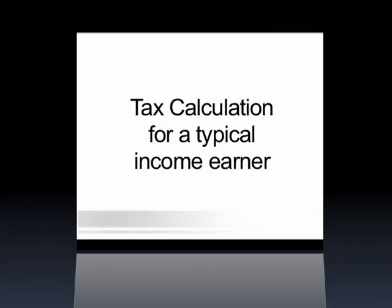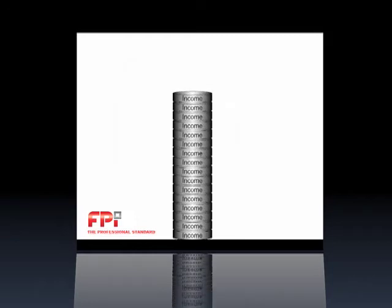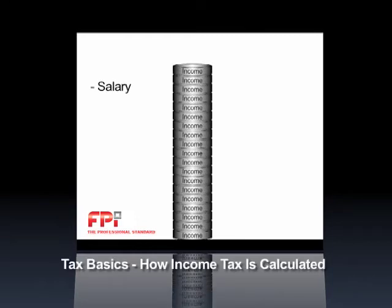Here is how tax would be calculated for a typical income earner. Firstly, all of your income is added together. This could include your salary income, any commission that you earn, bonuses you get once a year, rental income from property, and interest that you earn from an investment or a savings account at a bank, and so on.